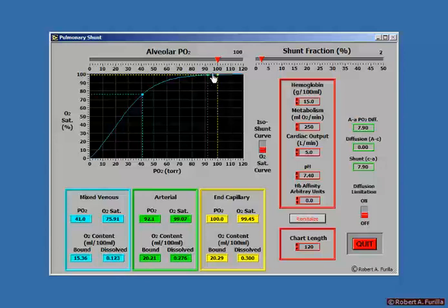And our alveolar PO2 is in yellow, which equilibrates with the capillaries, the pulmonary capillaries in the lung. So end capillary PO2 is 100. Arterial PO2 is 92. Venous PO2 is 41. So let's increase the shunt fraction. It's now at about 2 percent shunt.